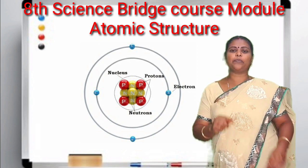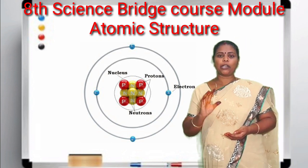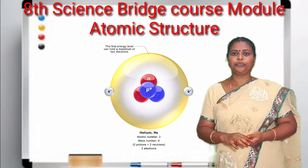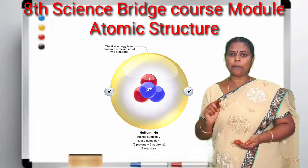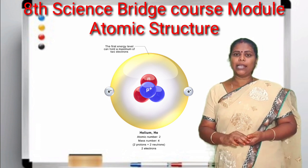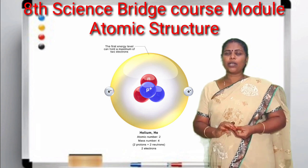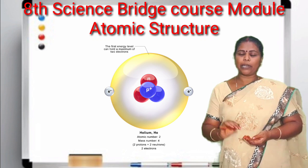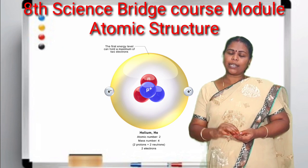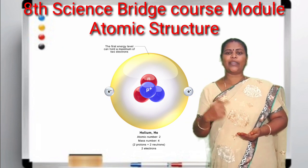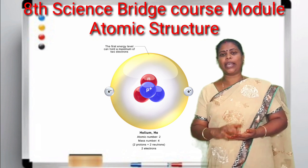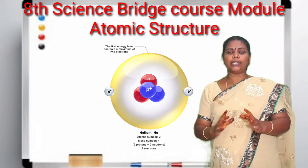Now we are going to see what is a proton. A proton is a subatomic particle with a positive charge and its elementary charge is plus 1, and it is represented by small letter P. The neutron is also a subatomic particle with a neutral charge. And electron is a subatomic particle with a negative charge. This electron rotates in a spherical path in the subshell. The positive charge of the proton and the negative charge of the electron hold the atom together in a particular position.